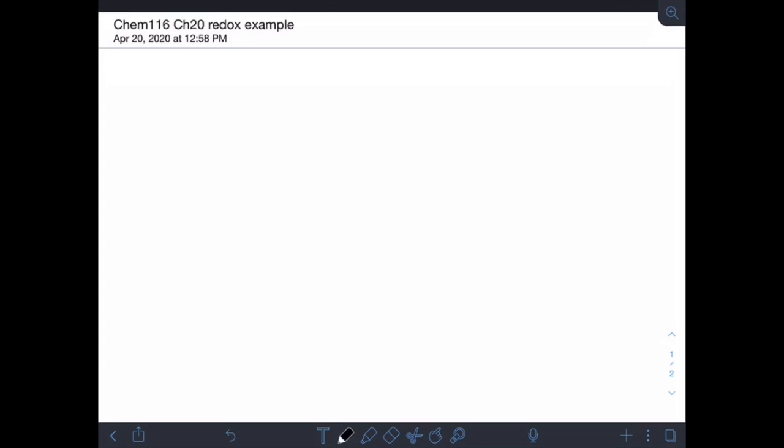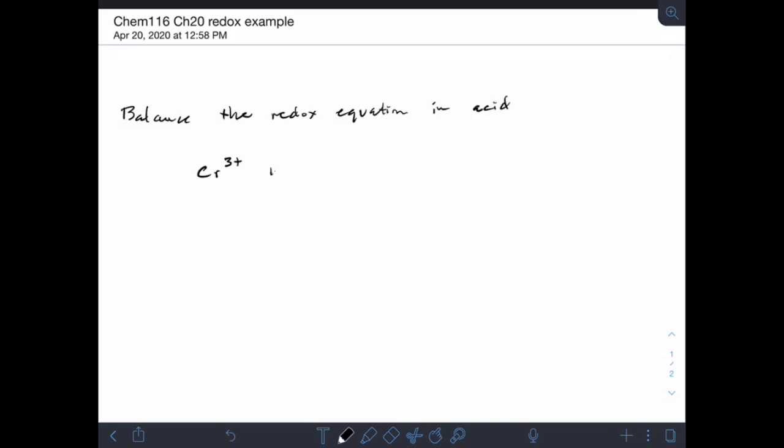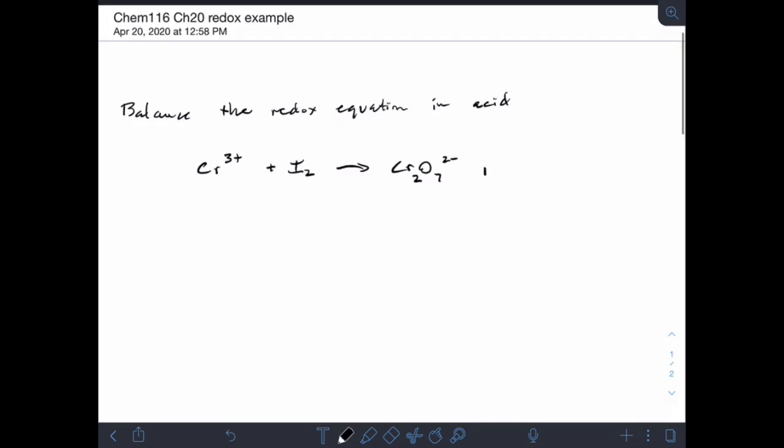So what we're going to be doing first is we are going to be asked to balance the redox equation in acid. And if you've watched that video you know that balancing in base is almost entirely the same except it's got a couple of extra steps at the very end. So our redox equation looks like this. We have chromium 3 plus plus I2 gives us chromate ion, Cr2O7 2 minus plus I minus. So our first step is to balance this redox equation.